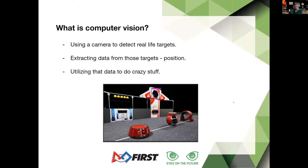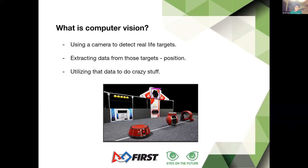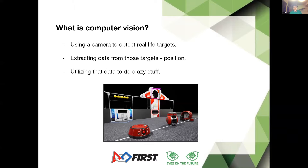What is computer vision? Simply put, it's using a camera to detect real-life targets on the field. In FRC especially, we take objects that humans can see and detect and extract data from those targets — such as position, distance, and orientation. From that data we can do things like shoot a ball into a target or move towards a certain point.